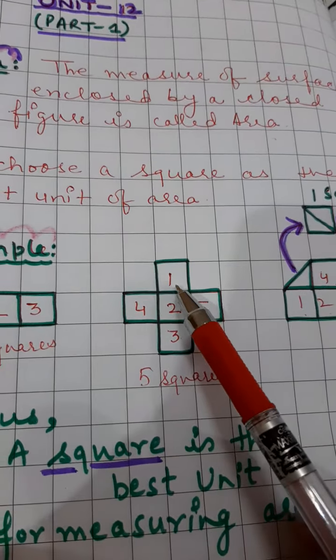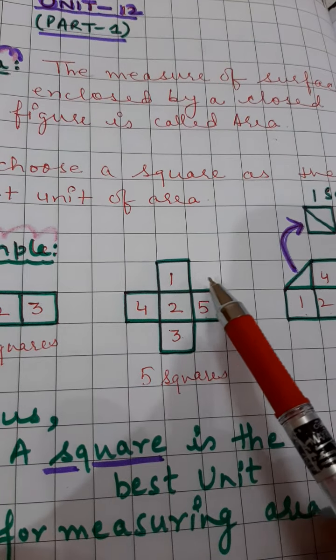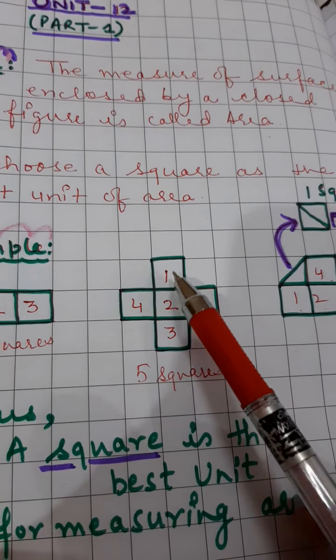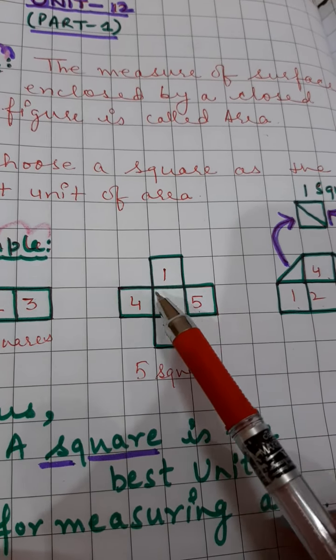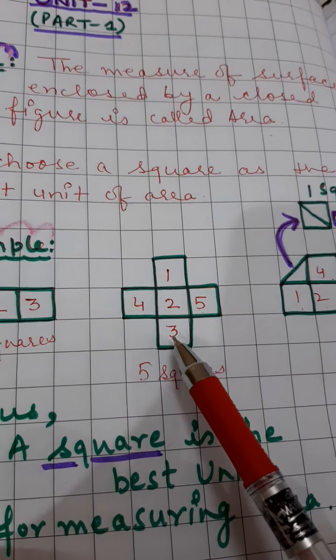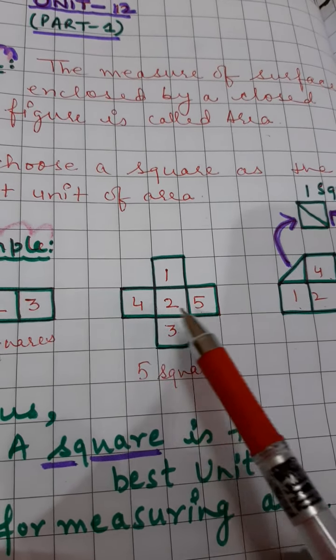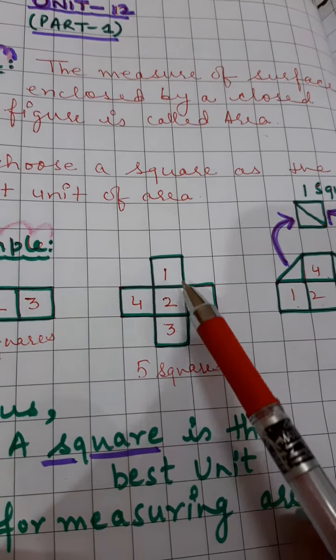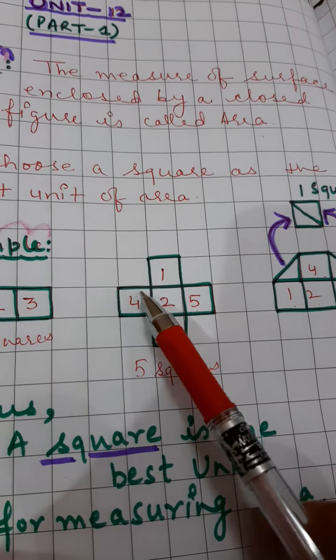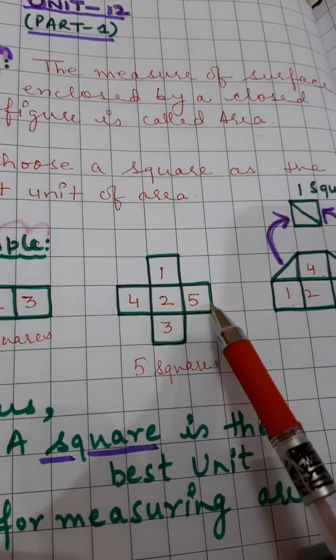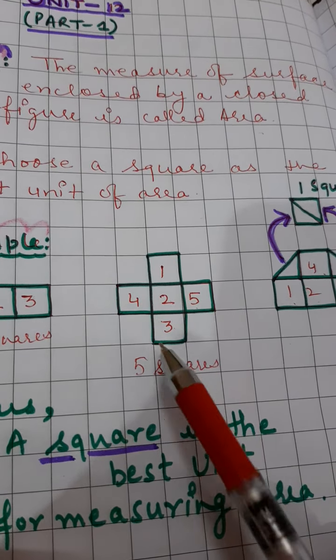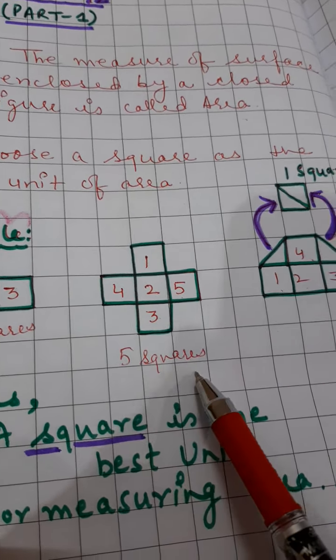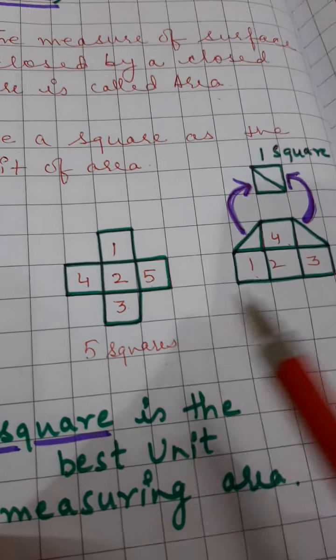Here you can see how many squares are there: 1, 2, 3, 4, and 5. There are 5 squares. So the area covered by this figure is 5 squares.